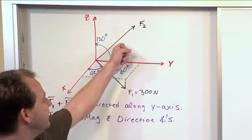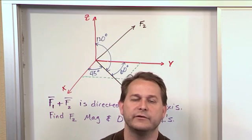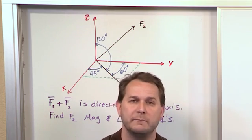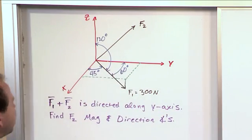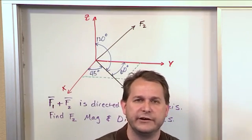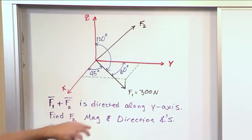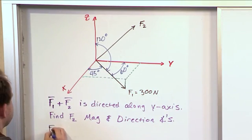And so we're trying to find out what does this vector need to be to make that happen. So let's figure out the magnitude and direction angles of F2 to make that happen. So the first thing we need to do, the trick to all these summation problems, is you want to find the Cartesian representation of your vector. And so in this case, we need to find the Cartesian representation of F1. So for F1, there's many ways to write this vector in Cartesian.